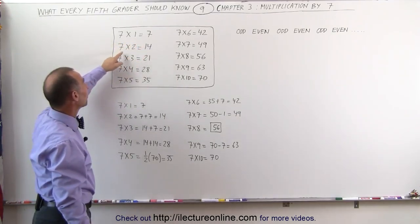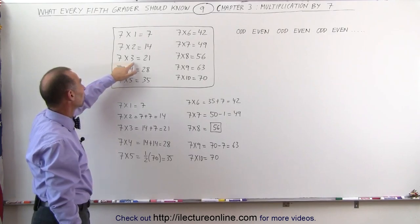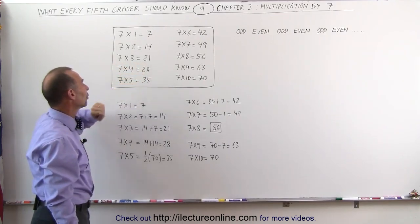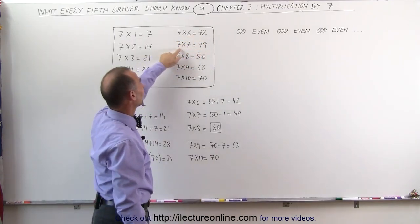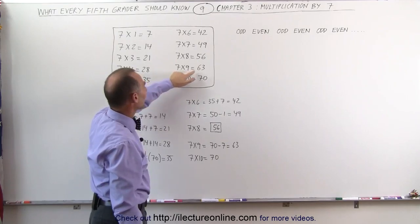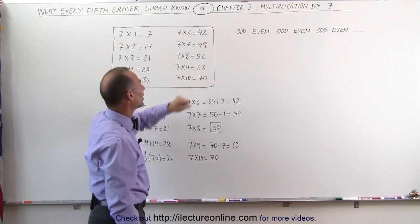7 times 1 is 7, 7 times 2 is 14, 7 times 3 is 21, 7 times 4 is 28, 7 times 5 is 35, 7 times 6 is 42, 7 times 7 is 49, 7 times 8 is 56, 7 times 9 is 63, and 7 times 10 is equal to 70.